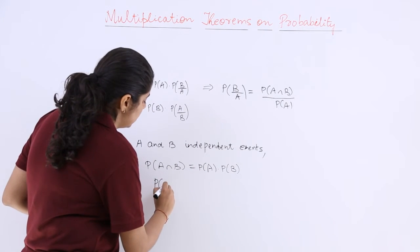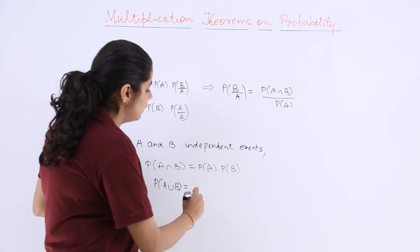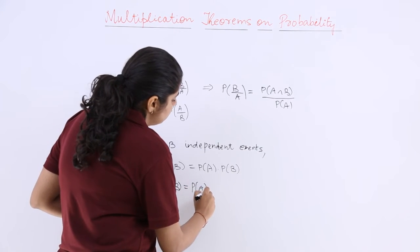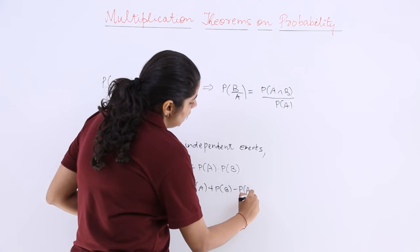This is regarding intersection. If I have to make a formula regarding union, what will it be like? It will be P of A plus P of B minus P of A intersection B.